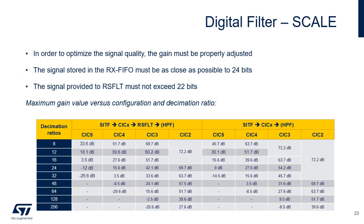Ideally, for a full-scale input signal, the signal provided to the reshape filter should be as close as possible to 22 bits in size. If the reshape filter is not used, then the signal size should be as close as possible to 24 bits. Too little gain can degrade the signal to noise ratio. Too much gain can cause saturation. The table shown in this slide gives the optimum gain value for several filter configurations. The left-hand side of the table is applicable when the reshape filter is active. The right-hand side is applicable when the reshape filter is bypassed. Also note that some specific applications may require a different gain setting.